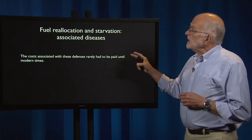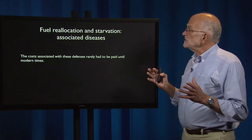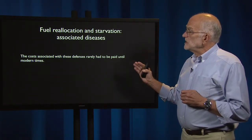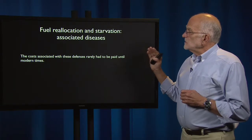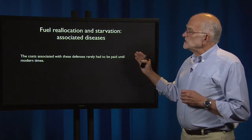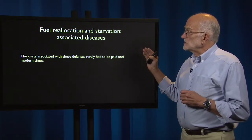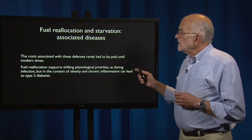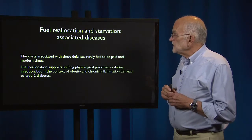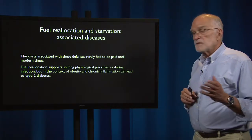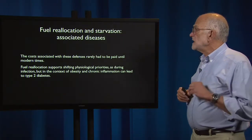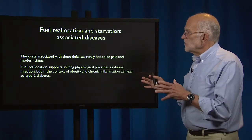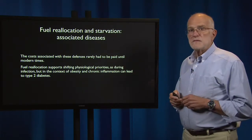Fuel reallocation is essential for managing our physiology and for managing things like starvation, but it has associated diseases — though those diseases elicit costs that rarely had to be paid until modern times. Fuel reallocation supports shifting physiological priorities, for example during infection or pregnancy. But in the context of obesity and chronic inflammation, these same processes can lead to type 2 diabetes.